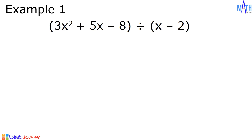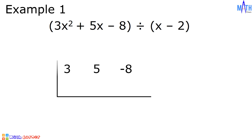Since there are no missing terms in the dividend, the coefficients are 3, 5, and negative 8. For the divisor, x minus 2 is of the form x minus k, where k is equal to positive 2.